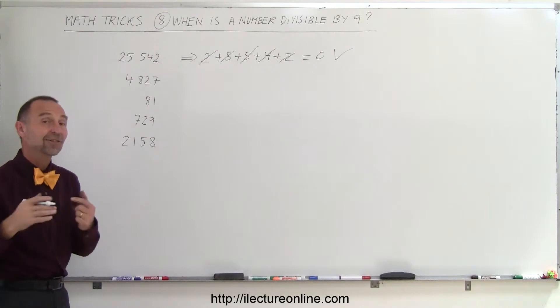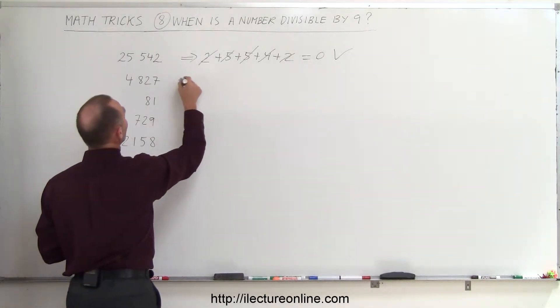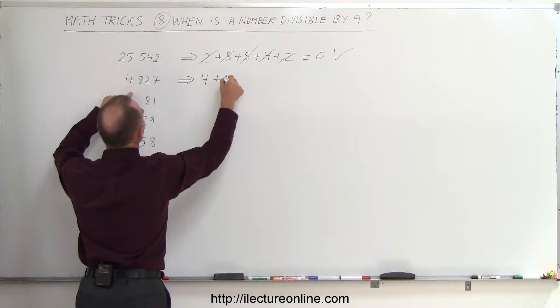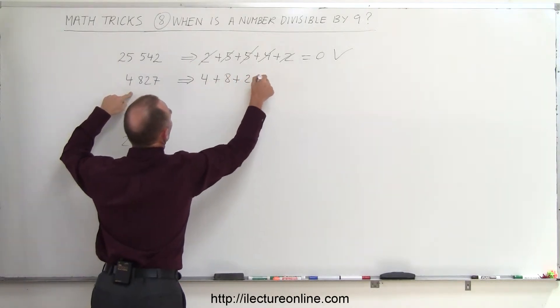If you didn't catch that, let's take a look at the next one. Here we're going to add these numbers together: 4 plus 8 plus 2 plus 7.